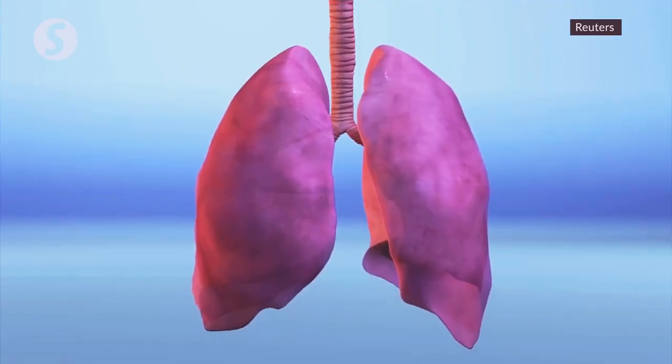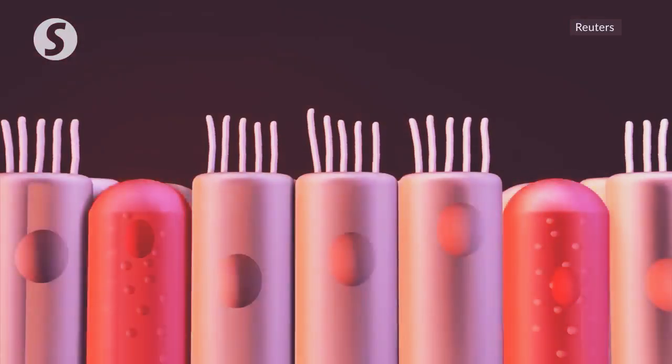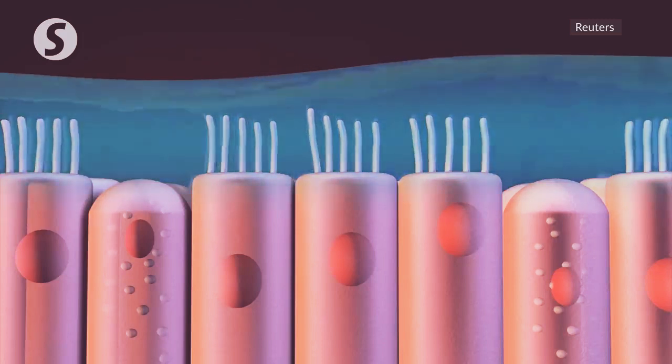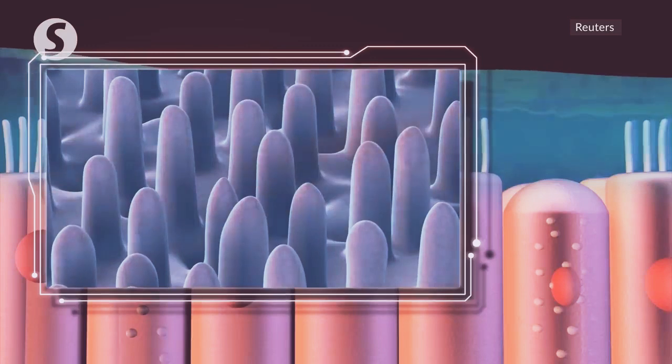Citing Kingston University microbiologist Mark Fielder, Sky News reports that the virus seems to attack two types of lung cells: goblet cells that coat the respiratory tract with mucus and ciliated cells that usually filter out pathogens.